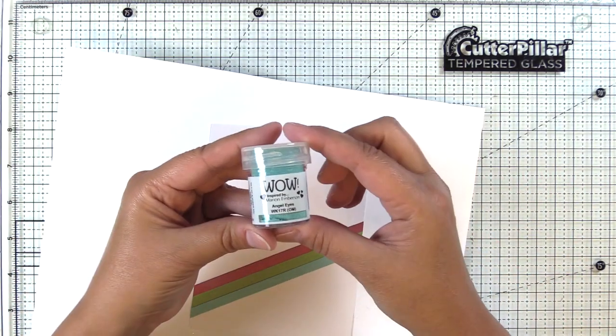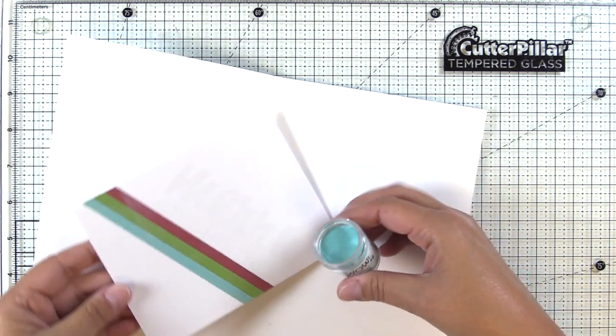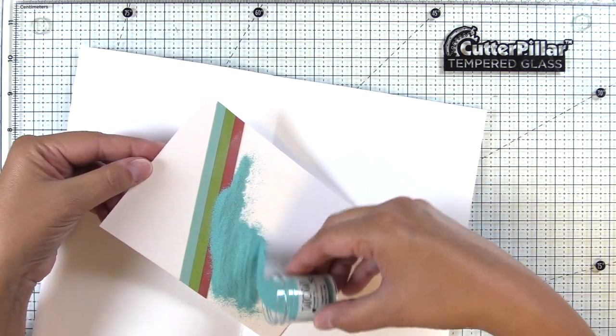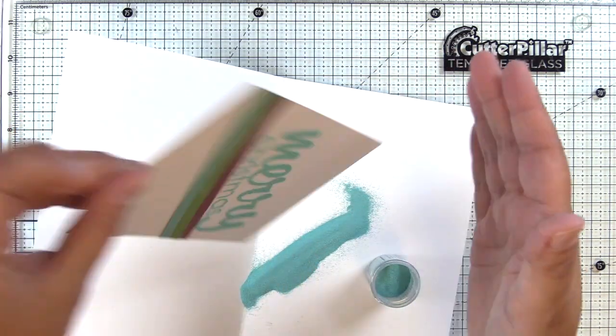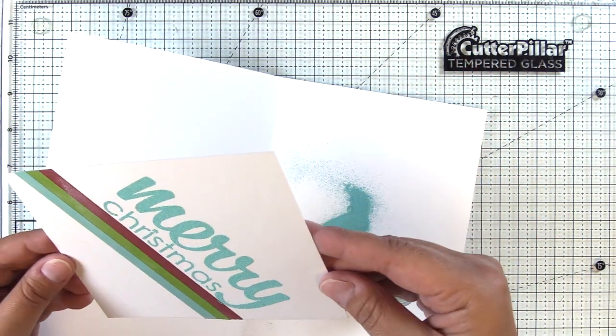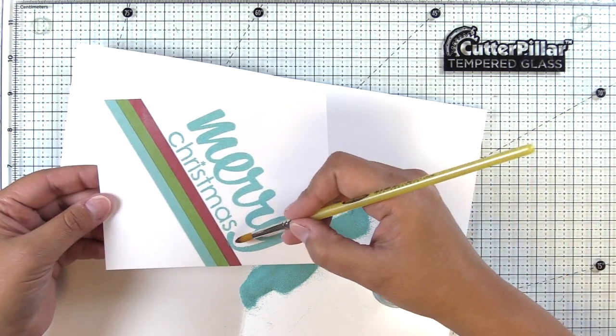Then I have Angel Eyes embossing powder from Wow here, and this is an opaque embossing powder. So you could actually emboss this onto colored cardstock and it's still going to retain its color.